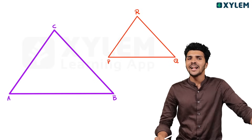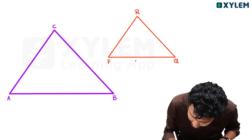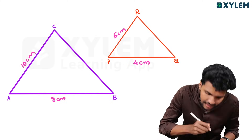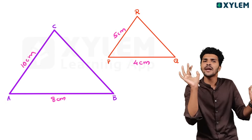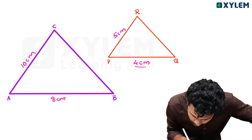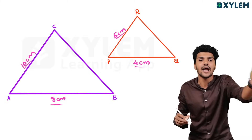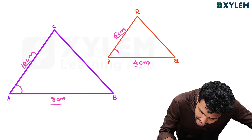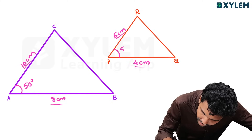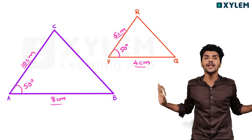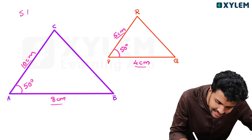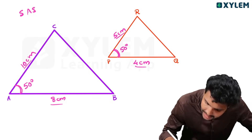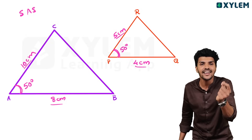Now, this side is 4 cm and the corresponding side is 8 cm. This side is 5 cm and the corresponding side is 10 cm. The ratio is 4 to 8 and 5 to 10 — both equal 2. This angle is included between the sides, so by SAS similarity, the triangles are similar.